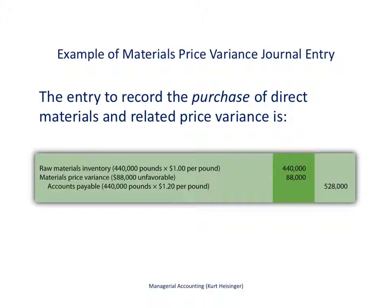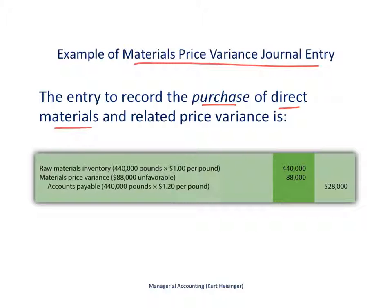This slide and the following slides cover the debits and credits of recording transactions using a standard costing system — all relating to product costs in a manufacturing setting. The first example shows materials price variance journal entries for the purchase of direct materials. Here we purchased 440,000 pounds at an actual price of $1.20 per pound, so we owe the vendor $528,000, which is our credit to accounts payable.